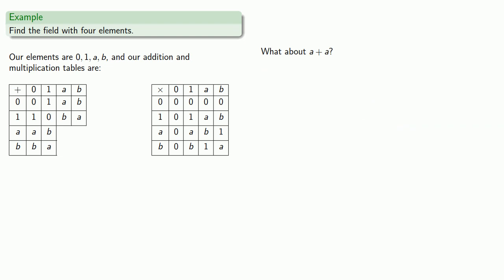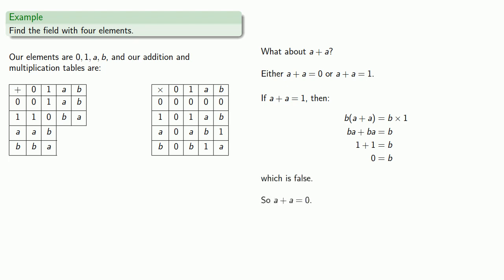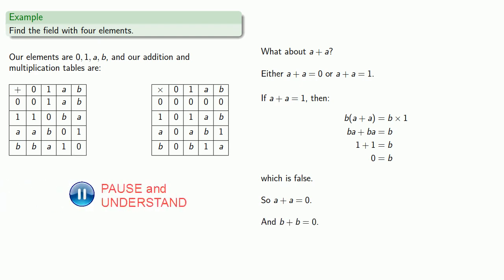What about a plus a? Either a plus a is 0 or a plus a equals 1. If a plus a equals 1, the product b times (a plus a) leads to a contradiction since the additive identity must be unique and it's not b. So a plus a must be 0. By uniqueness of sums, a plus b equals 1, and b plus b must be 0. One important thing to notice is that once we decided what our additive and multiplicative identities were, we had no choice in how we assign these sums and products, which means this is the only field with four elements — any other field is isomorphic to this one.